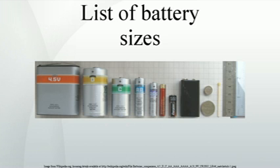Camera cell batteries. Digital and film cameras often use specialized primary batteries to produce a compact product. Flashlights and portable electronic devices may also use these types.